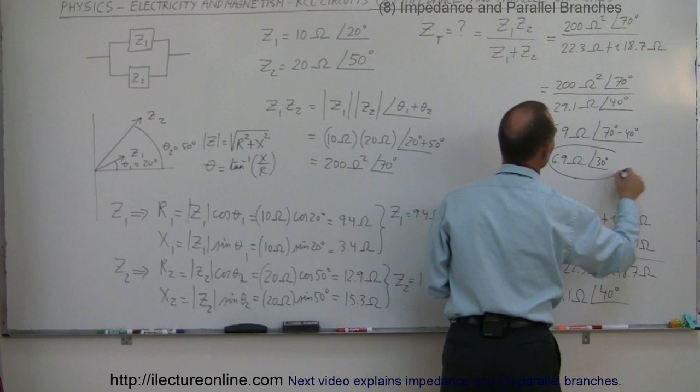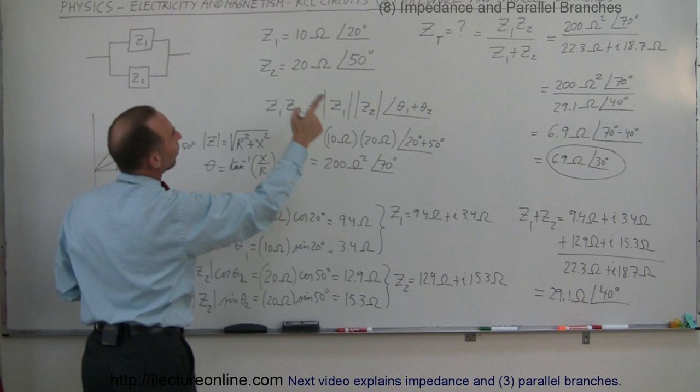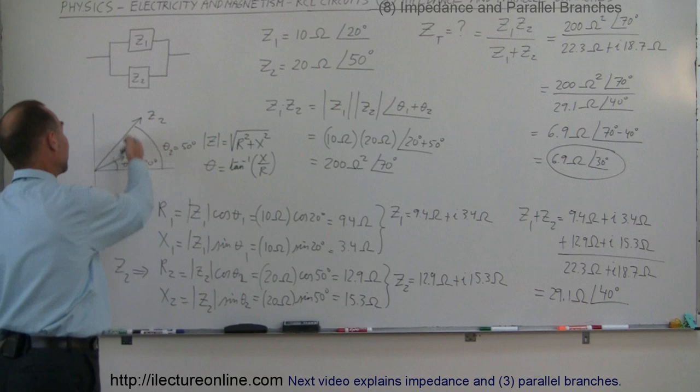So the equivalent impedance of those two parallel branches is 6.9 ohms at an angle of 30 degrees. You cannot simply add these together the way you do with series impedances — for parallel impedances you have to go through this entire process.